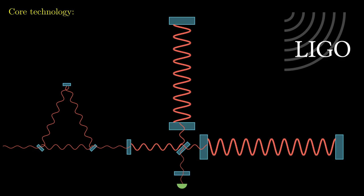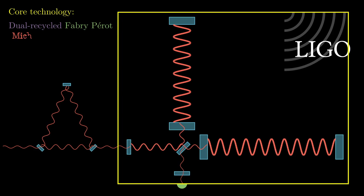This is done by placing seven optics in a specific pattern known as a dual-recycled Fabry-Perot-Michelson interferometer.